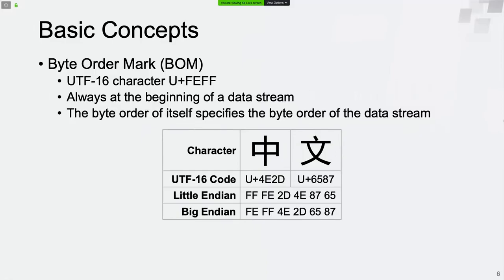Here is a simple example to illustrate how the byte order mark works. There are two characters with values 4E2D and 6587. In little endian format, the data stream will be FF-FE-2D-4E-87-65. In big endian format, the data stream will be FE-FF-4E-2D-65-87.